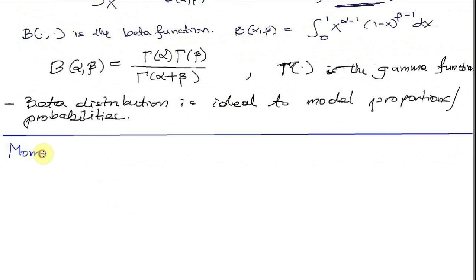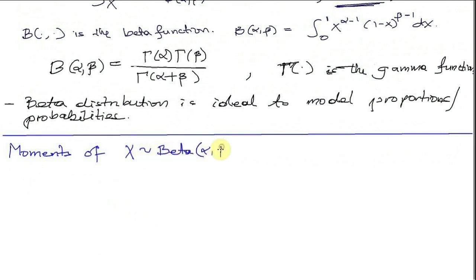Next, we will try to find the moments of a random variable x which is distributed beta with parameters alpha and beta. Let me write down the first few moments and then I will derive them.